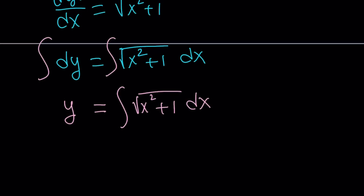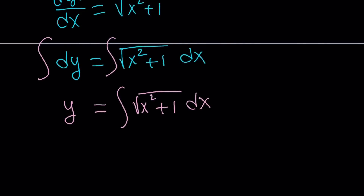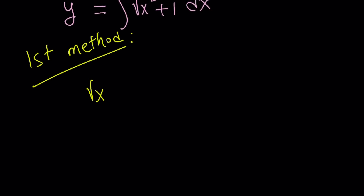Let's go ahead and start with the first method. I'll be presenting two methods. The first method involves Euler's substitution. Here's how we can solve this: first of all, let's go ahead and set √(x² + 1) equal to x + t. And then we're going to square both sides.